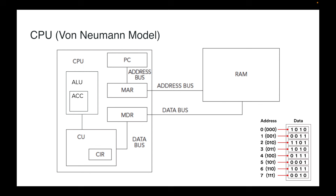We're going to start with the PC, or program counter. Basically, anytime you open a computer program, the data for that program goes into the RAM — random access memory. All the instructions and data for that program are loaded into RAM, organized into an address and the resultant data, with each address holding some binary data corresponding to the program's operations.